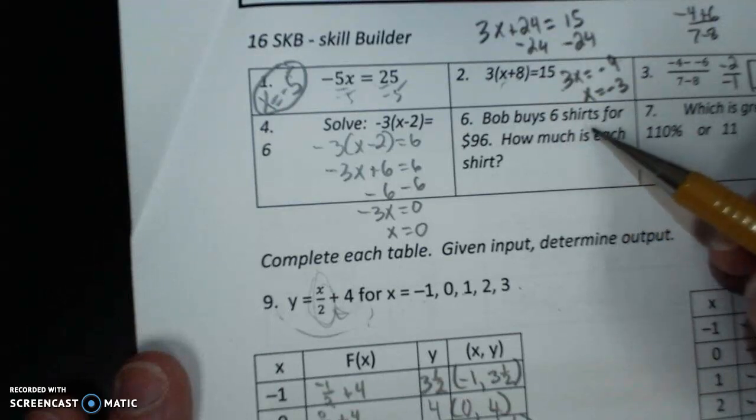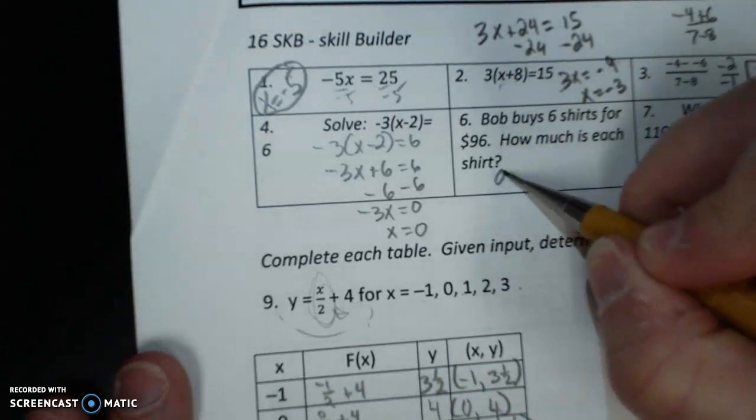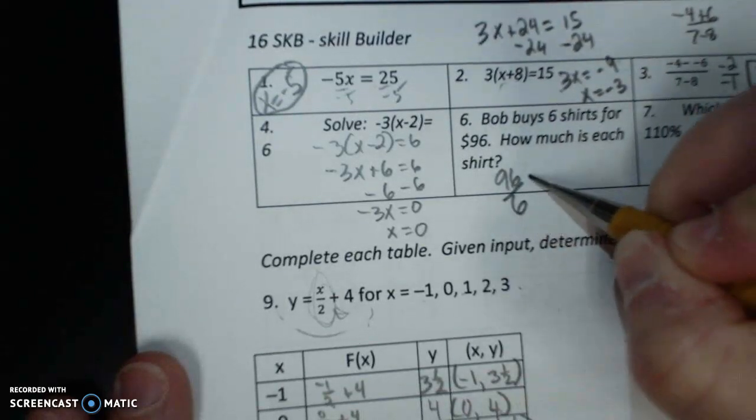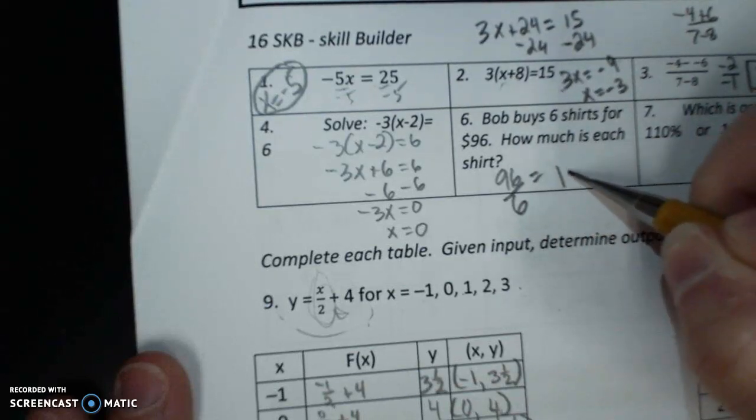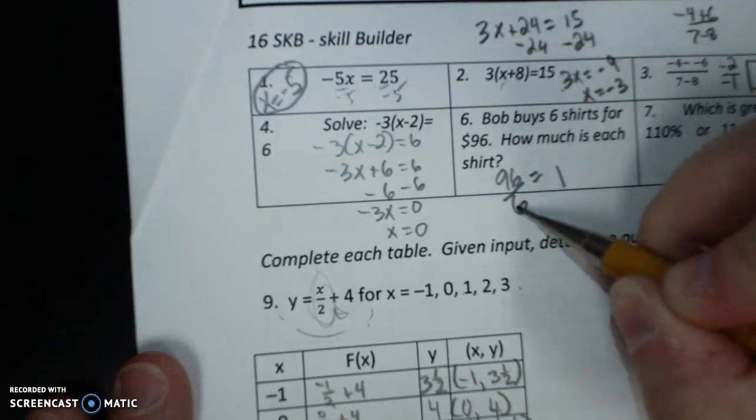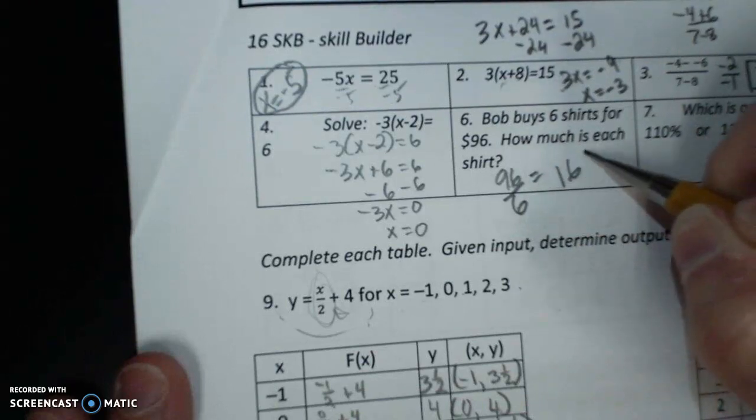Bought by 6 shirts for $96. How much is each shirt? 96 divided by 6 is $16.